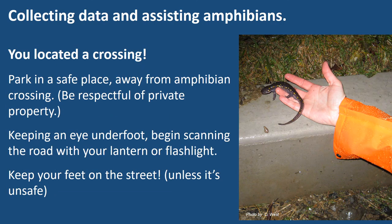So let's say you've located a crossing — the next step is to collect data and assist amphibians. If you've found a place with activity, park in a safe place away from the amphibian crossing so you don't accidentally run over any amphibians with your car. Also be respectful of private property and try to avoid parking right in front of people's homes. Once you get out of the car, keep an eye underfoot — get your light on right away and start scanning the road. If possible, keep your feet on the street as opposed to the grassy edges where you might not be able to see frogs or salamanders.